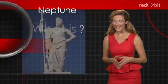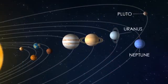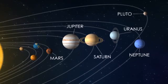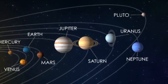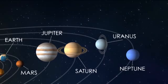Neptune is the eighth planet in our solar system and is named for the Roman god of the sea. It's also the most distant planet from the sun, a distinction it won when Pluto was demoted to the status of dwarf planet in 2006.